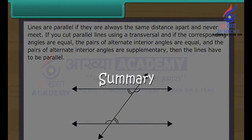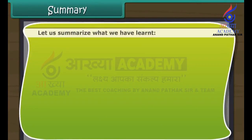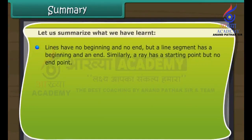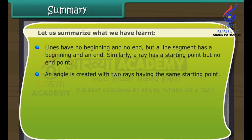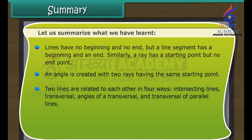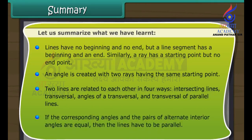Summary: Let us summarise what we have learnt. Lines have no beginning and no end, but a line segment has a beginning and an end. Similarly, a ray has a starting point but no end. An angle is created with two rays having the same starting point. Two lines are related to each other in four ways: intersecting lines, transversal, angles of a transversal, and transversal of parallel lines. If the corresponding angles and the pairs of alternate interior angles are equal, then the lines have to be parallel.